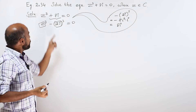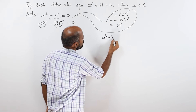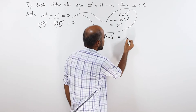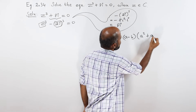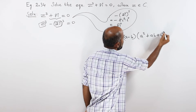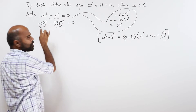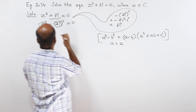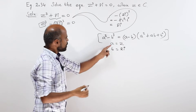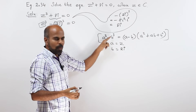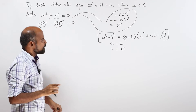Put a in the first box and b in the second box. The formula for a cube minus b cube is equal to a minus b into a square plus ab plus b square. In this case, the first box is z, and the second box is 2i. So a cube is z cube and minus b is negative 2i the whole cube. That means z cube minus 2i the whole cube.